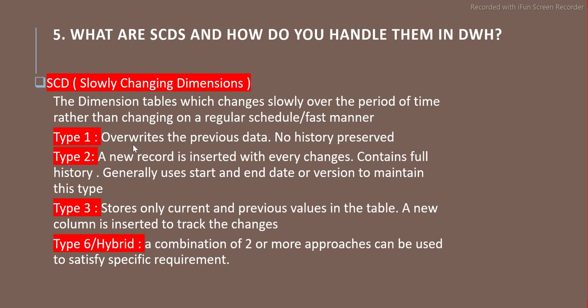Type 1 SCD simply overrides the previous data — there is no history kept. It is basically used for simple mistake corrections. That's why we use Type 1.